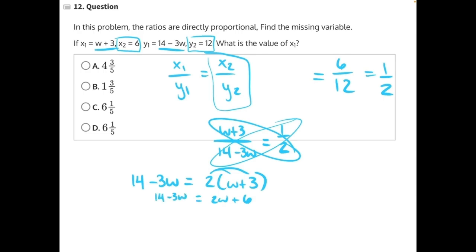And now we can begin to do opposite operations to isolate our variable w. Let's add, since 3w is being subtracted, we'll add 3w to both sides. These will cancel, giving us 14 equals 5w plus 6. Then 6 is being added, so we can do the opposite and subtract. These will cancel,